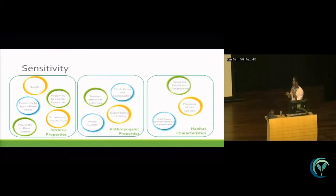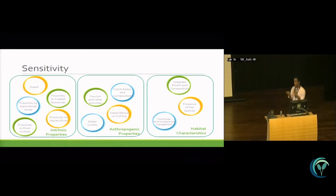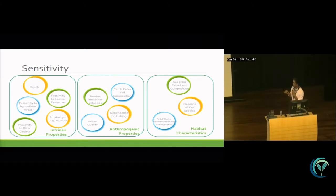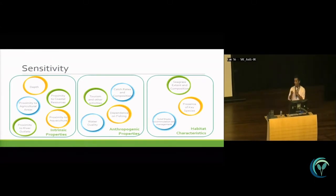For the sensitivity, we determined several factors for each component. For intrinsic properties, these are GIS-derived data including depth, proximity to coastal resources, proximity to agricultural areas, aquaculture, and river outlets. These proximities were determined using GIS software, buffering from the shapefiles of aquaculture areas and coastal resources, and assigning each buffer a score from one to five. The closer the proximity of seagrass meadows to agricultural areas, aquaculture, and river outlets, the higher its sensitivity. Next is the anthropogenic activities, covering water quality, dependence of the population on fishing, tourism, and other activities, and catch rates.